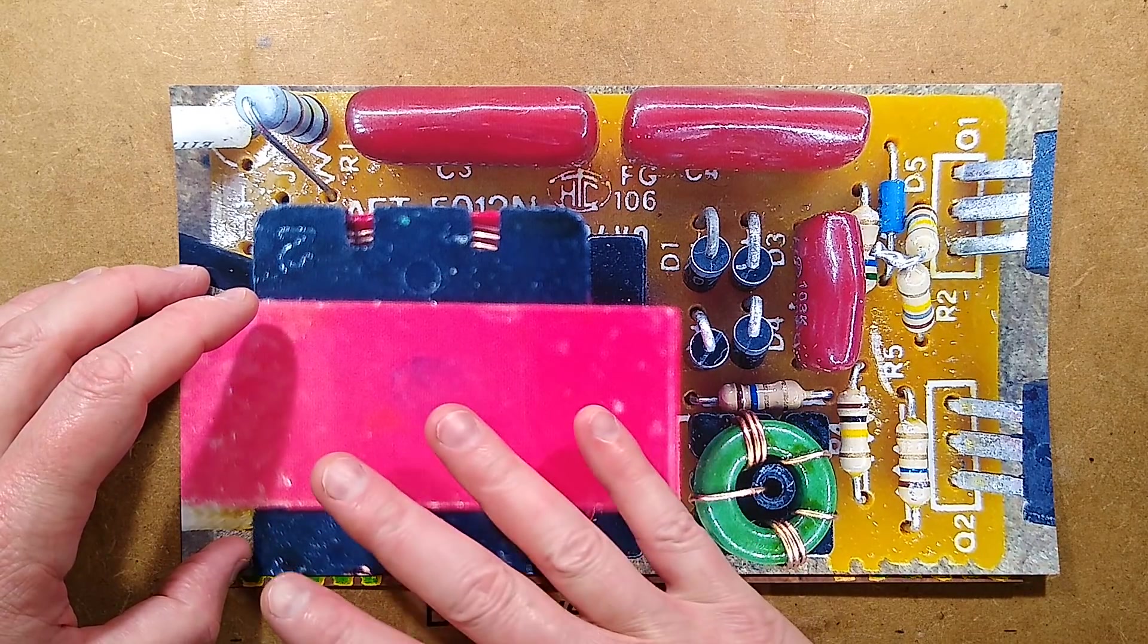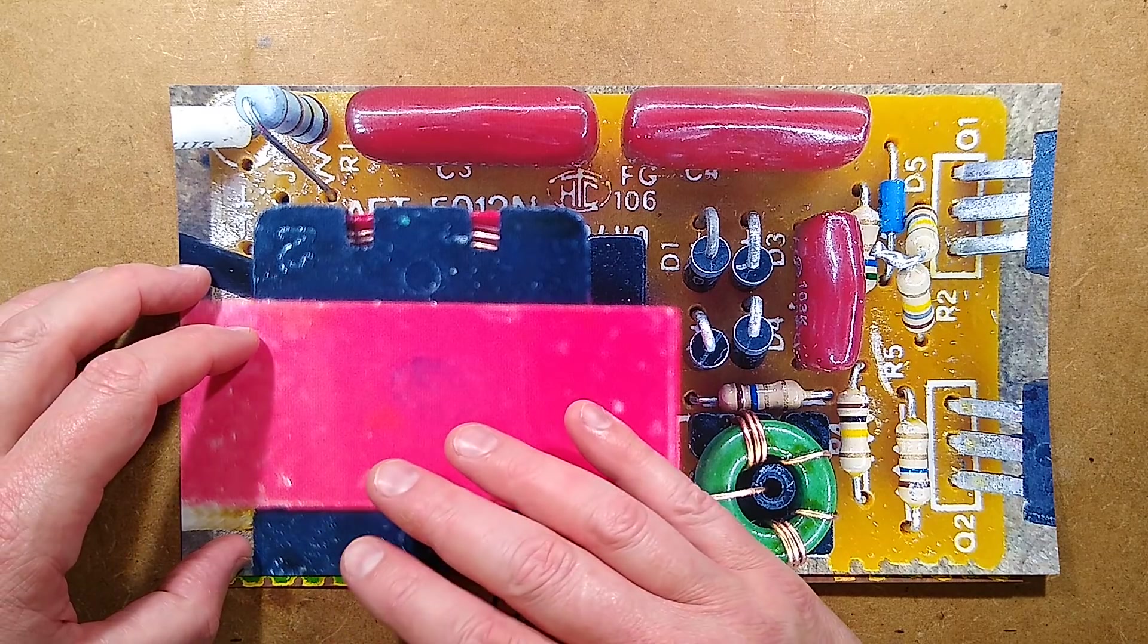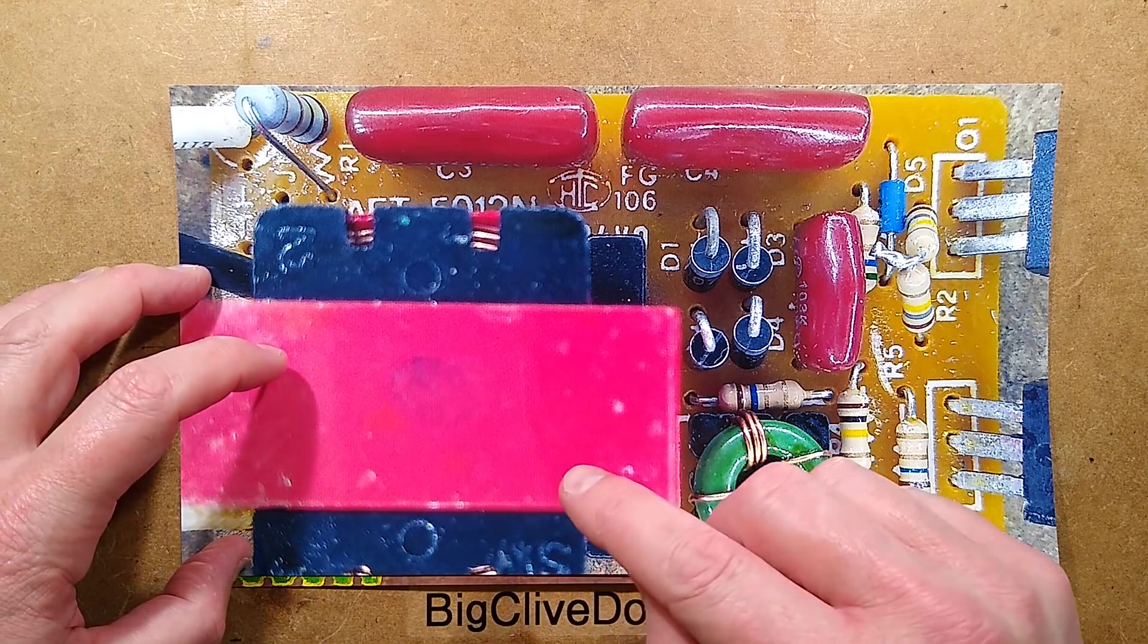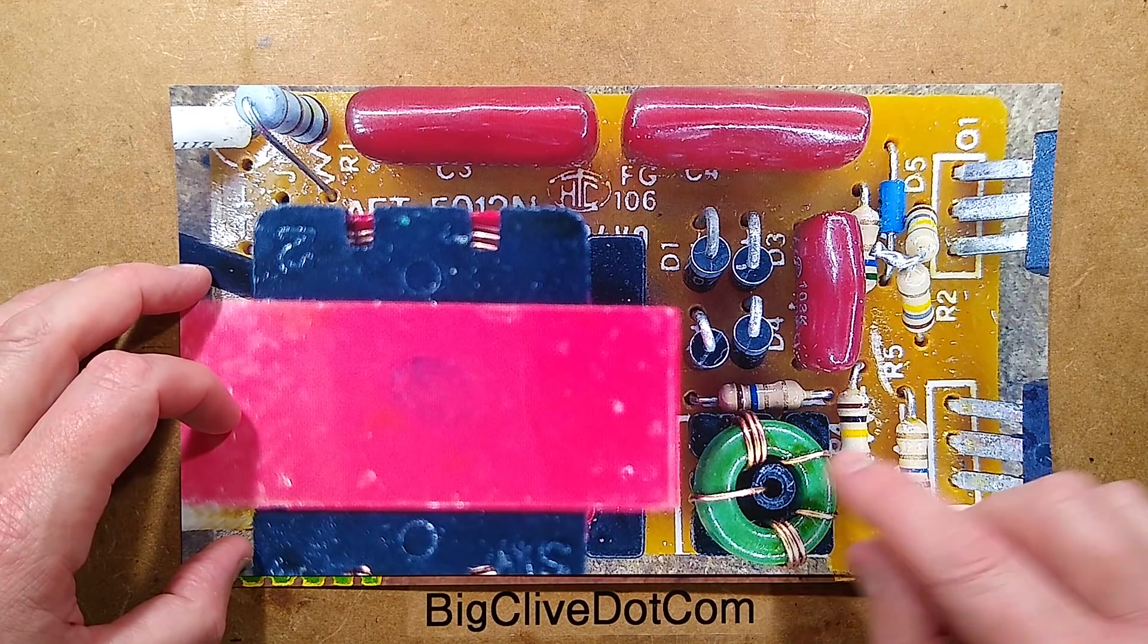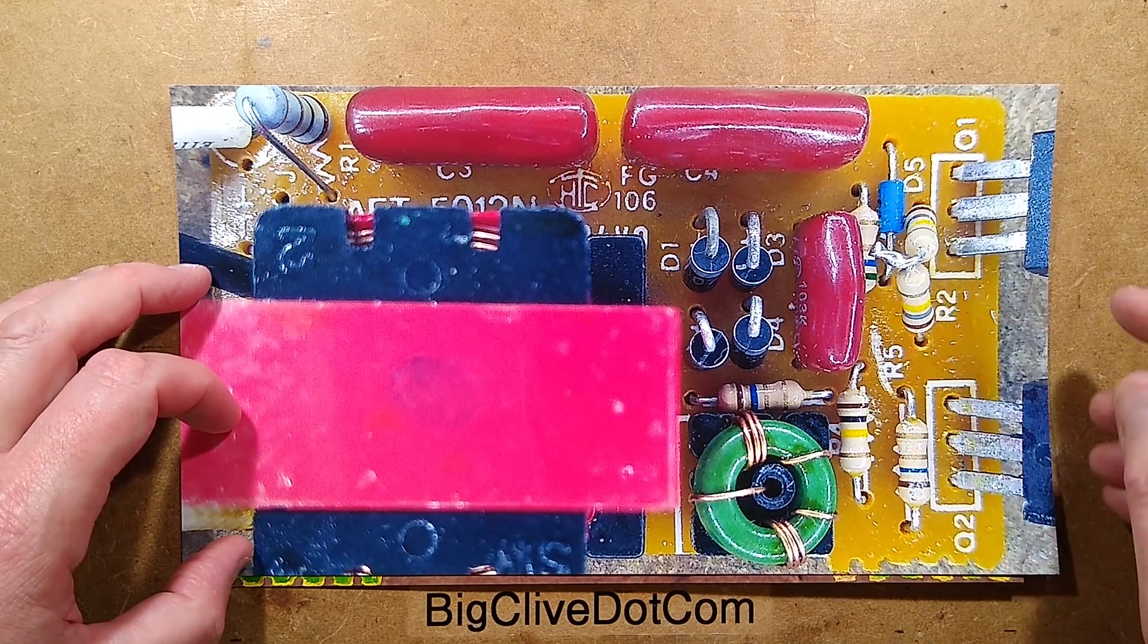And then the main transformer here which actually converts the mains voltage, in our case 240 volts AC, down to 12 volts AC approximately. Other things worthy of note are this little blue component here, which is a DIAC.